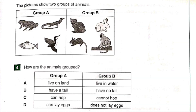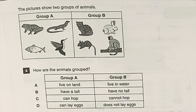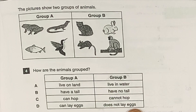Question number four. The picture shows two groups of animals: Group A and Group B. How are the animals grouped? A. Live on land / live in water. B. Have a tail / have no tail. C. Can hop / cannot hop. D. Can lay eggs / does not lay eggs. The answer is D: can lay eggs / does not lay eggs.